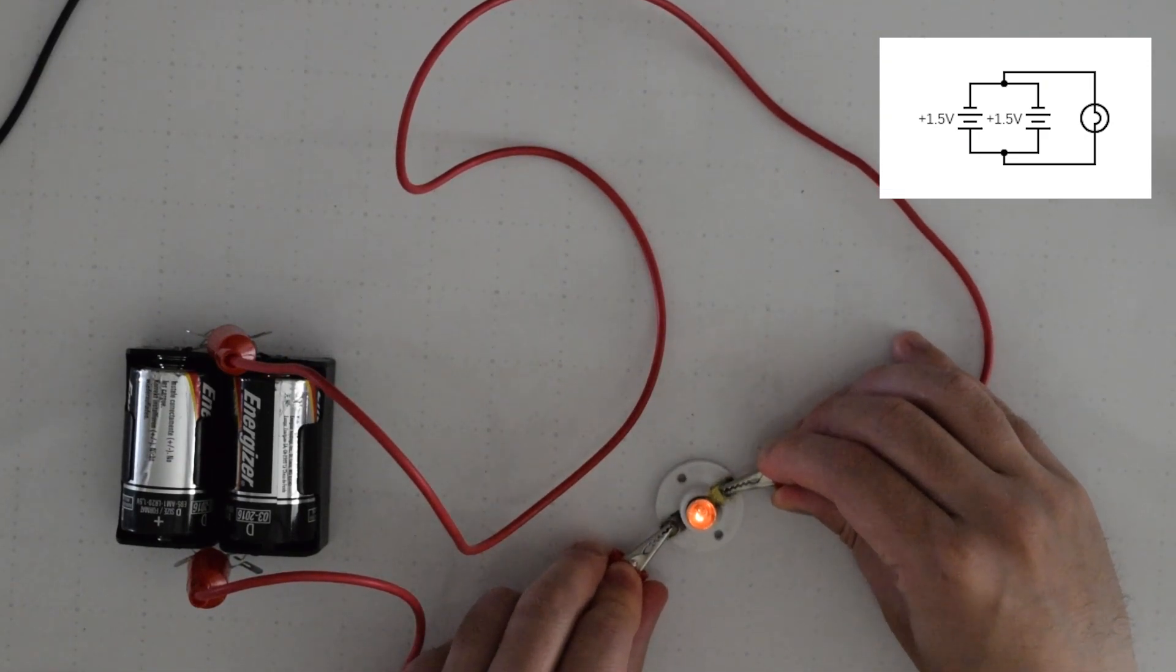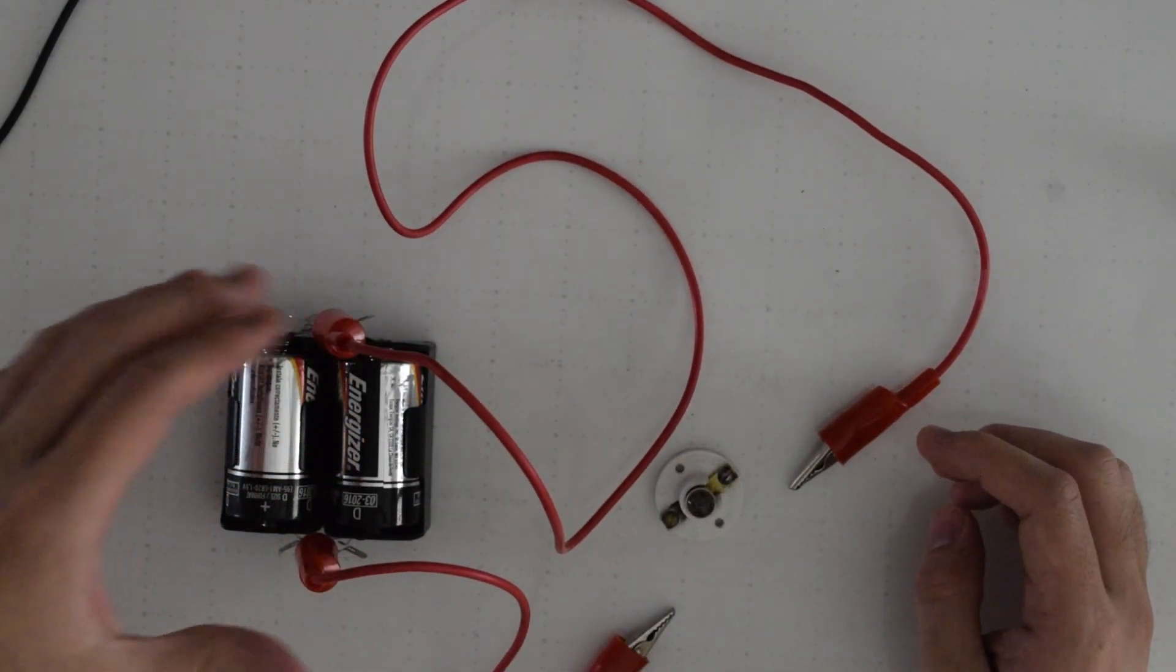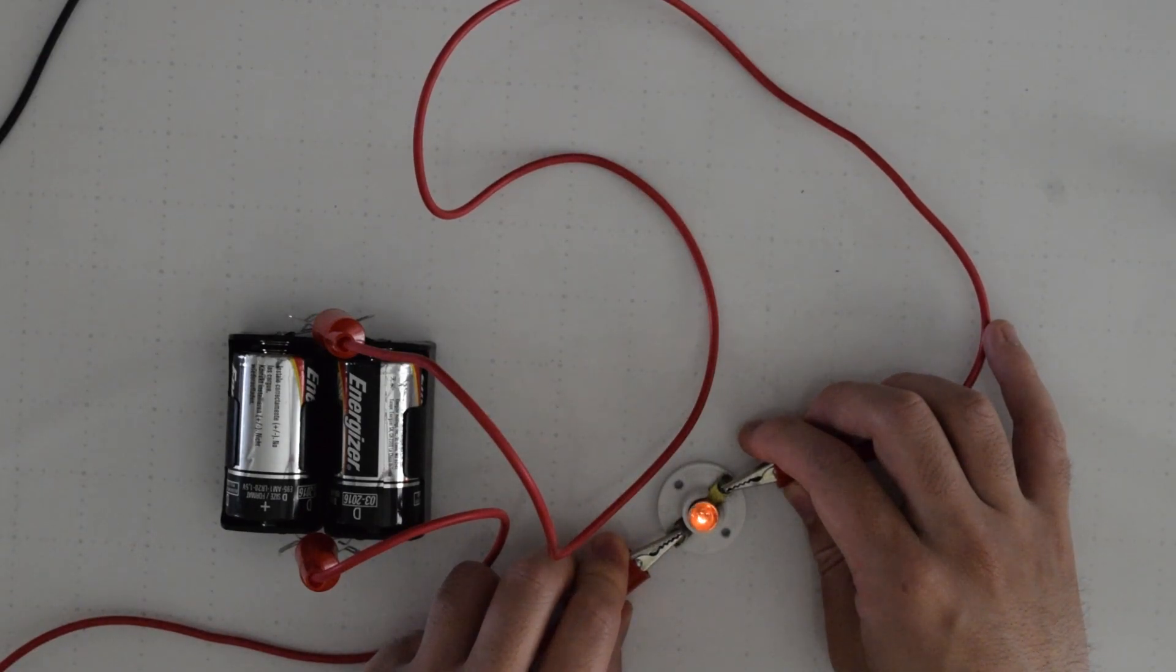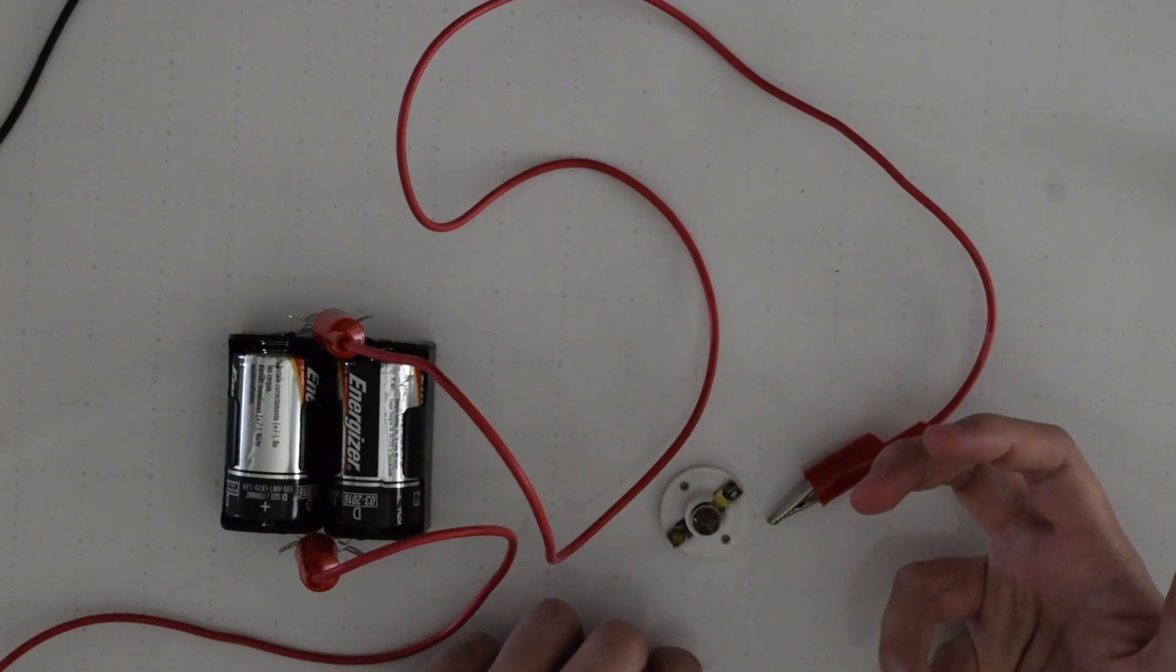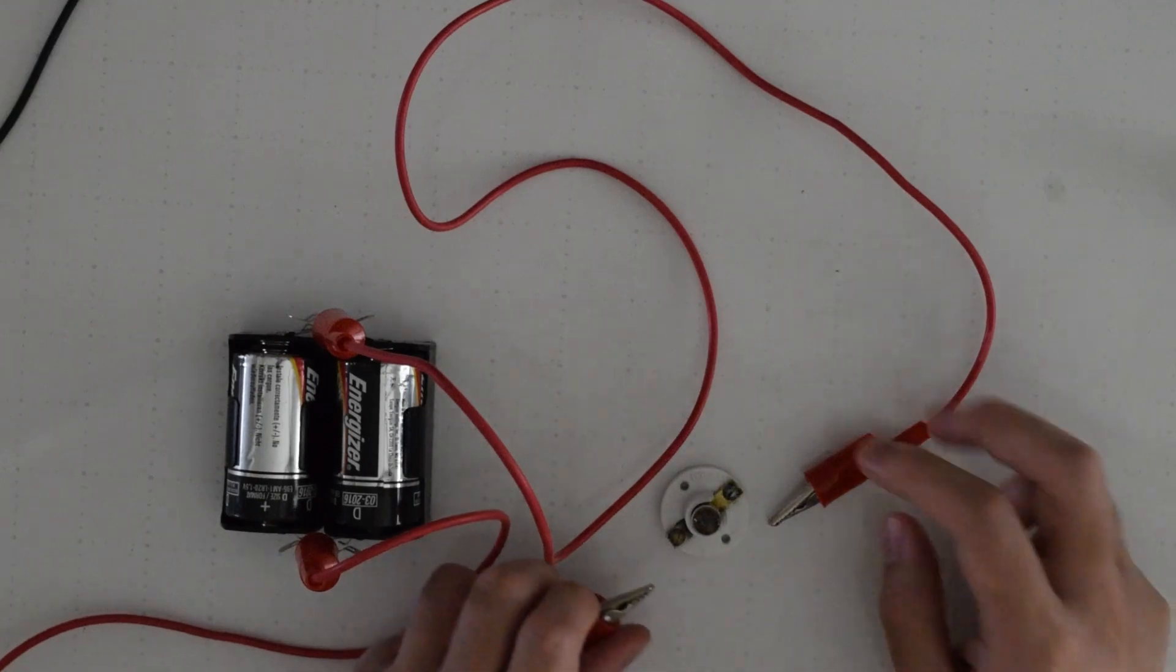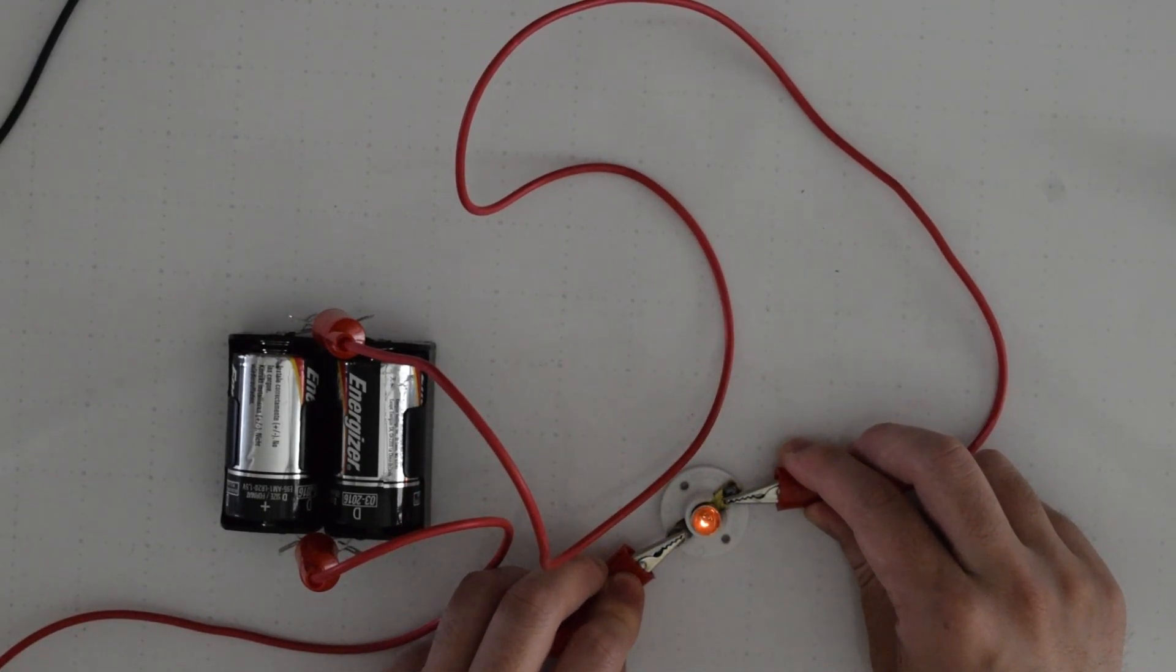So the reason for that is that when the batteries are in parallel, meaning that they're connected like this and they're both coming into the circuit as opposed to one following the other, instead of getting a brighter light bulb what we're going to get is a longer active time. Meaning that if the light bulb was going to last for one hour with one battery it's going to be able to last for two hours with the batteries in parallel.